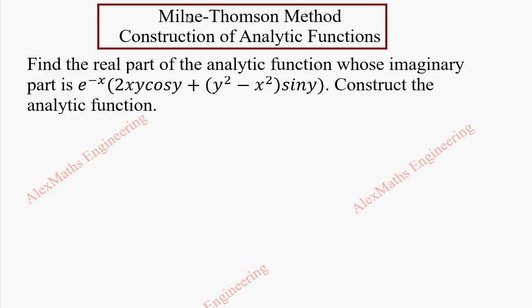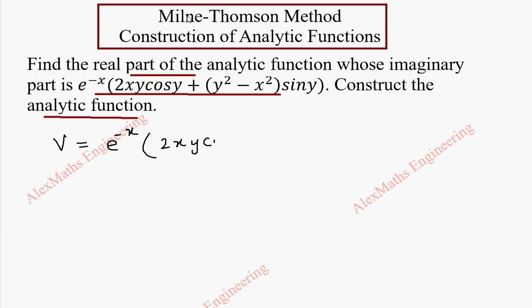Hi students, this is Alex here. In this problem, we are going to find the real part of the analytic function where the imaginary part is given, and we are going to construct the analytic function f. So let's take the imaginary part v, which is e^(-x) into 2xy·cosy plus y² minus x² into siny.